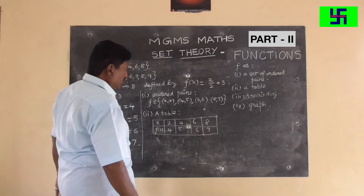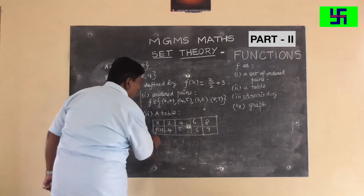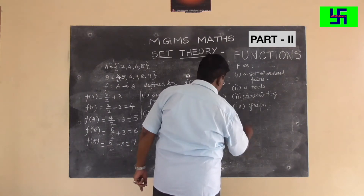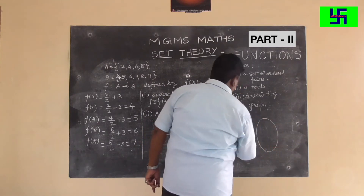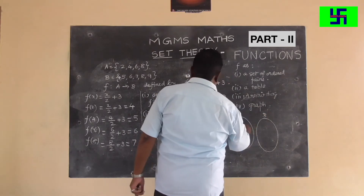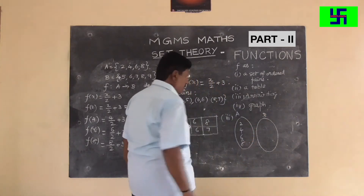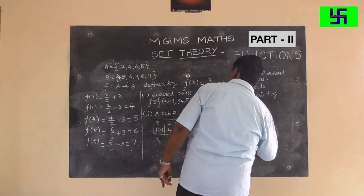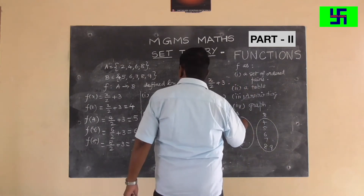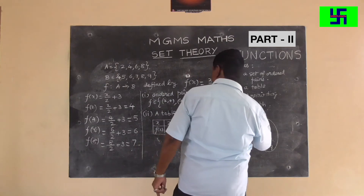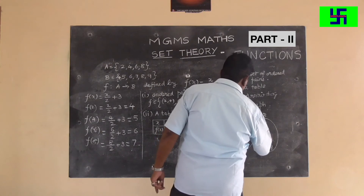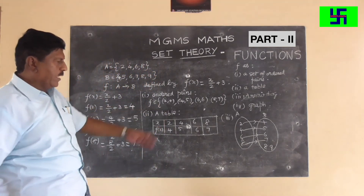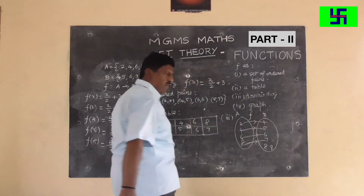For the arrow diagram, draw set A on the left with elements 2, 4, 6, 8 and set B on the right with elements 4, 5, 6, 7, 8, 9. Draw arrows: 2 to 4, 4 to 5, 6 to 6, 8 to 7. This is the arrow diagram for the function F.